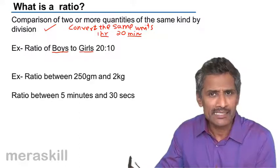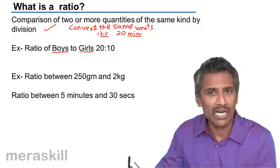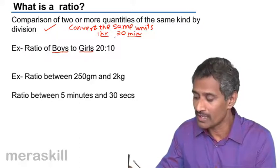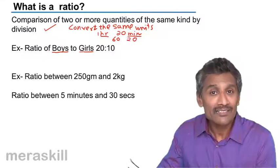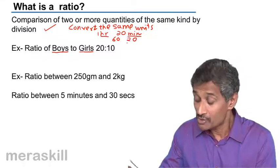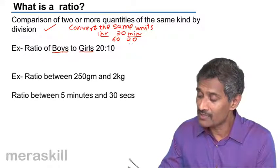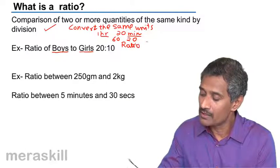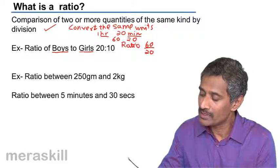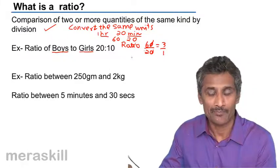Since it's easier to convert hours to minutes, we can write this as 60 minutes and 20 minutes. So the ratio turns out to be 60 by 20, which simplifies to 3 is to 1.